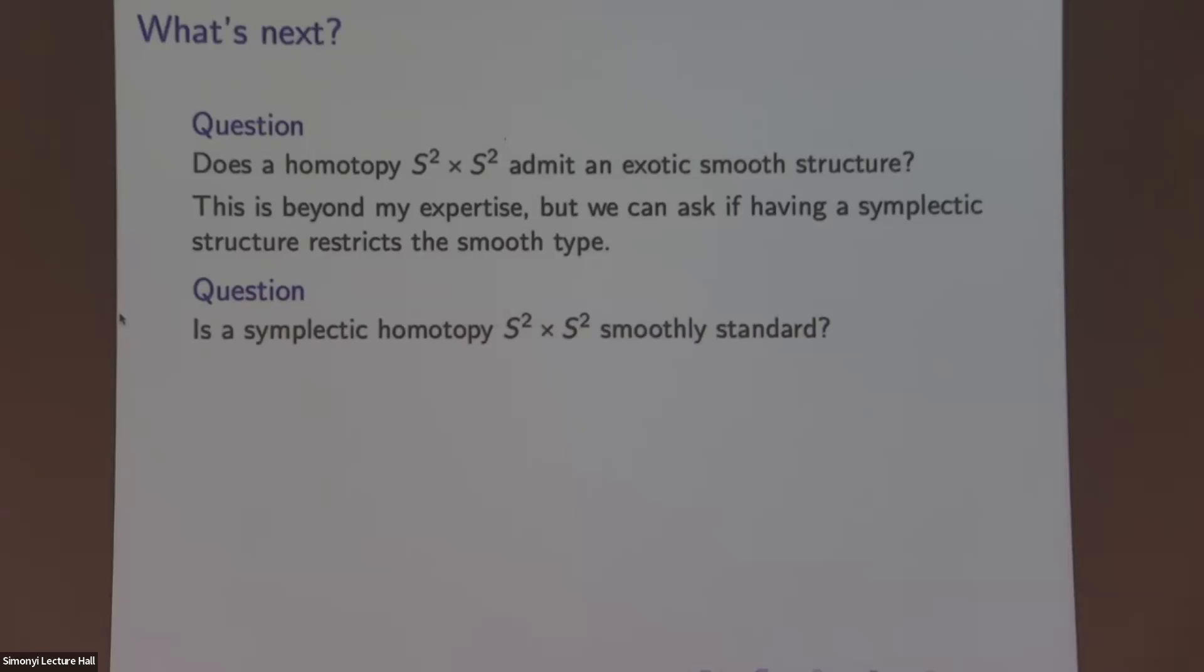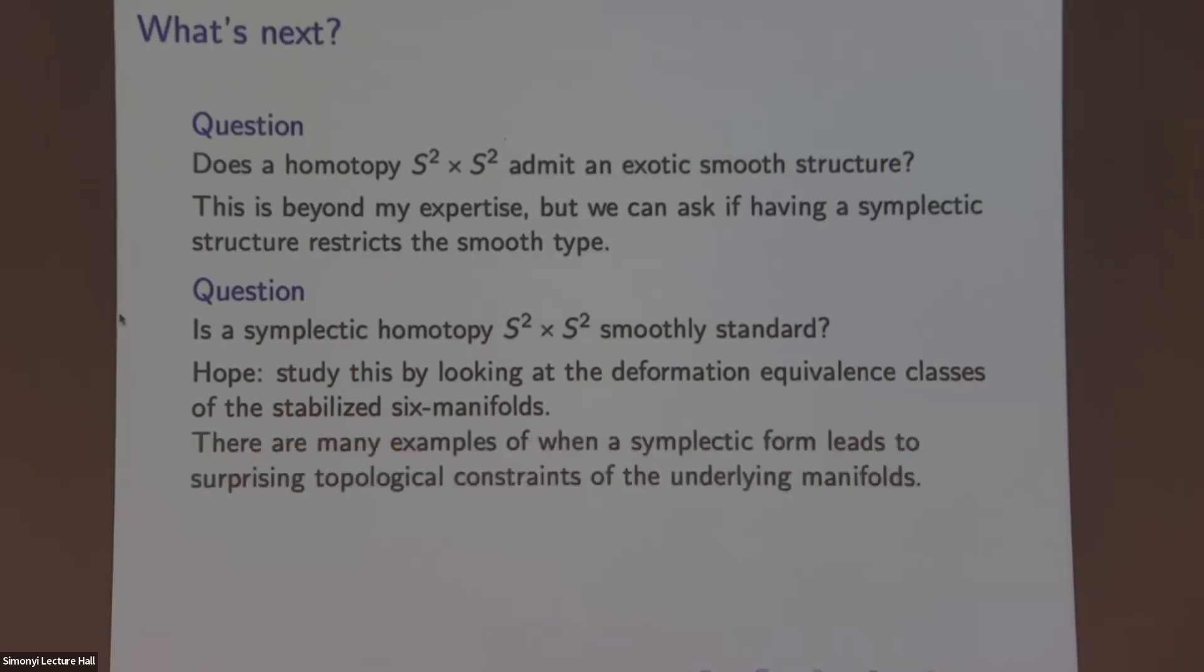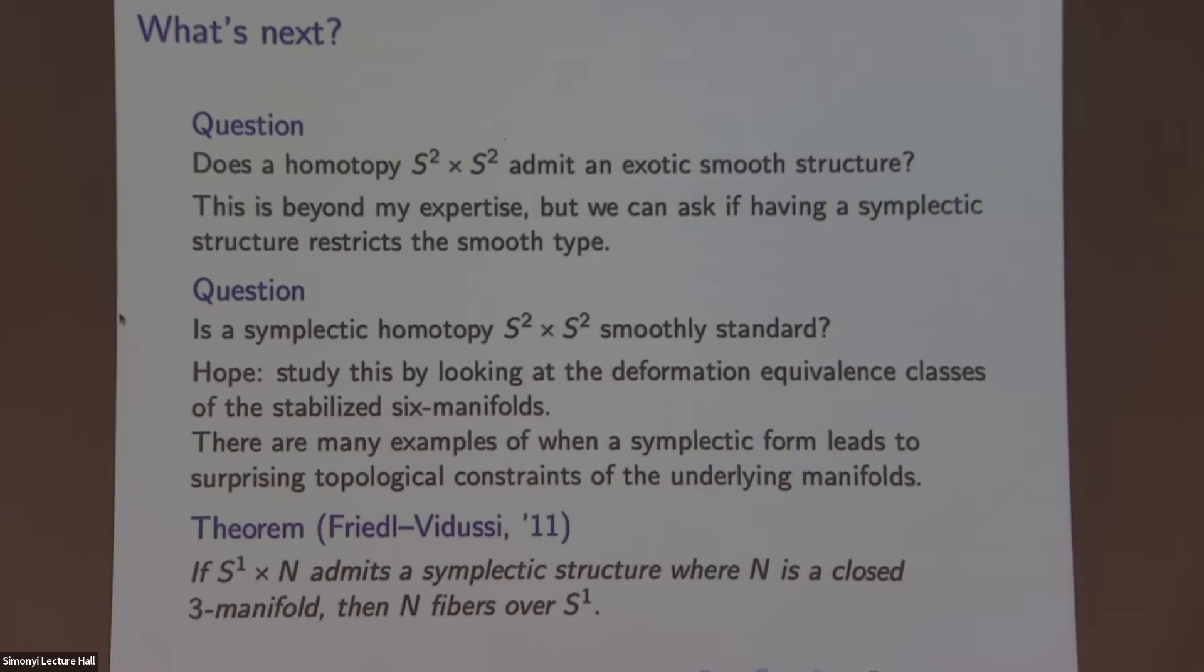So the question is, is a symplectic homotopy S2 times S2 diffeomorphic to standard? So my hope is that we can study this by looking at deformation equivalence classes of the stabilized six manifolds, which will tell us something about the four-manifold smooth topology. And this is optimistic, but there are many examples when a symplectic form leads to surprising topological constraints on the underlying smooth manifolds. So this is one of my favorite theorems, which says if you have a four-manifold that's S1 cross a closed three-manifold, and that four-manifold admits a symplectic structure, then the three-manifold is actually fibered over S1. So having this symplectic structure is very powerful to even tell you something about M.